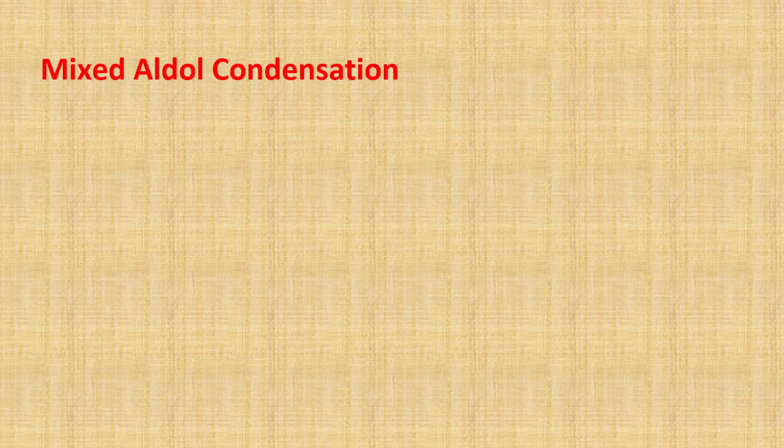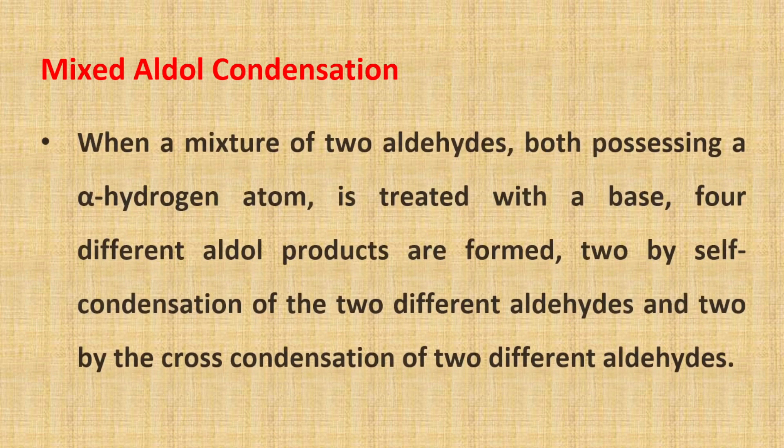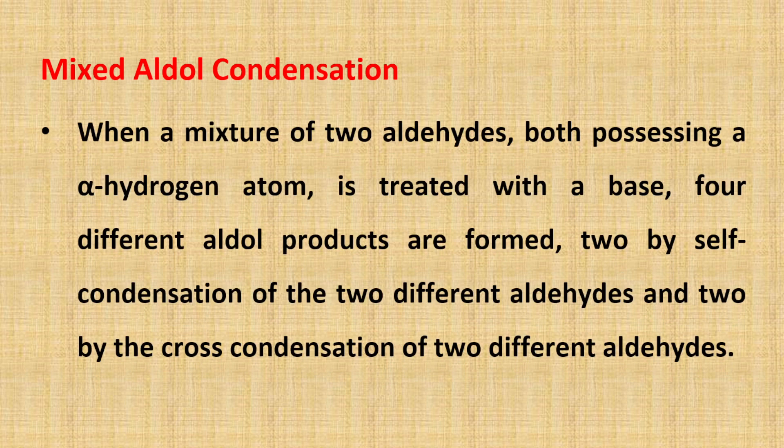Previously, we discussed aldol condensation using the example of acetaldehyde only. What if we have a mixture of two aldehydes? Let us discuss mixed aldol condensation. When a mixture of two aldehydes, both possessing an alpha hydrogen atom, is treated with a base like sodium hydroxide, four different aldol products are formed — two by self-condensation of each aldehyde and two by cross-condensation of the two different aldehydes.